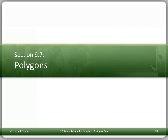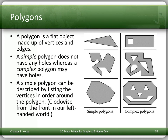Now, onto polygons — many-sided figures which may include triangles. A polygon is a flat object made up of vertices and edges. A polygon without holes is called a simple polygon; one with holes is called complex. A simple polygon can be described by listing the vertices in clockwise order, but that doesn't account for holes, so it can't be used for complex polygons.